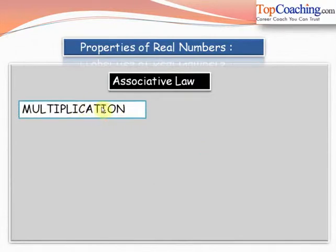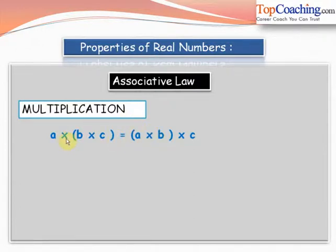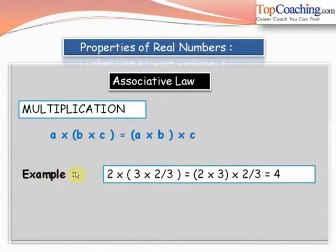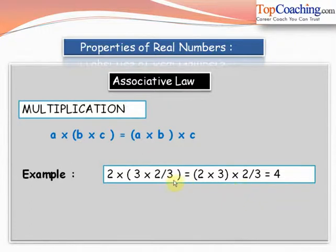Similarly, the associative law of multiplication states that a × (b × c) equals (a × b) × c. For example, 2 × (3 × 2/3) equals (2 × 3) × 2/3. On the left side, 3 and 3 cancel giving 2 × 2 = 4. On the right side, 2 × 3 = 6, and 6 × 2/3 = 4. So LHS equals RHS equals 4. Therefore, the associative law of multiplication holds for real numbers.